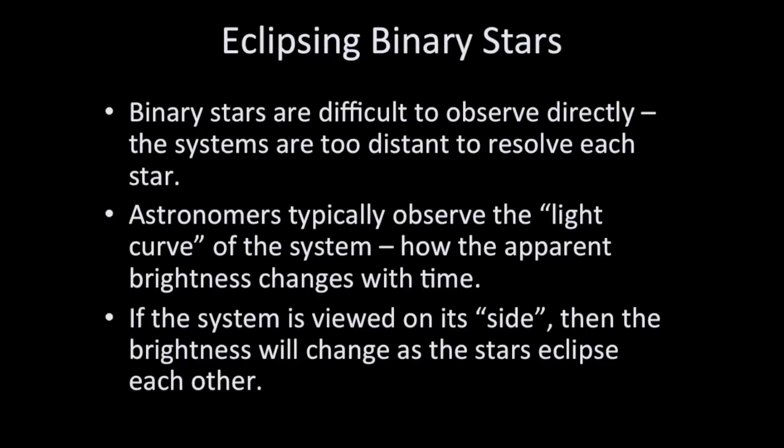So if we're viewing the system on its side, then when one star goes in front of the other one, some of the total amount of light will be lost. Astronomers observe the change in brightness that occurs.